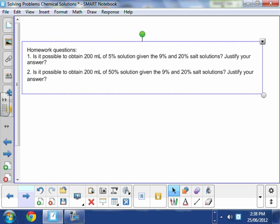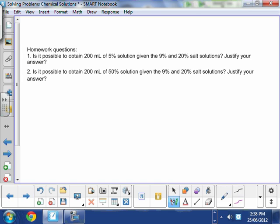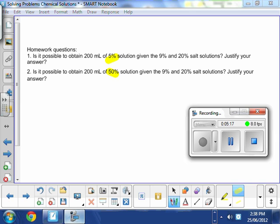Is it possible to obtain 200 milliliters of 5% solution given the 9% and 20% salt solutions? Justify your answer. And our second question, we want you to obtain the same 200 milliliters, but this time a 50% solution. I want to highlight the keywords here: 5% and 50%. Have fun solving these questions.